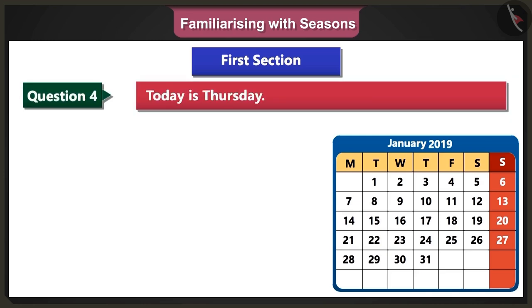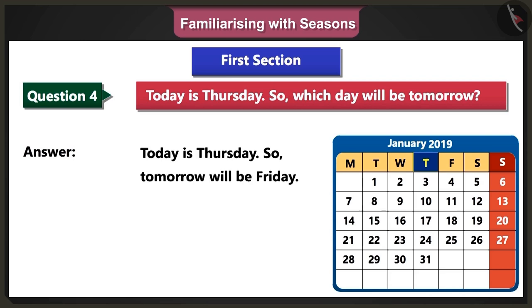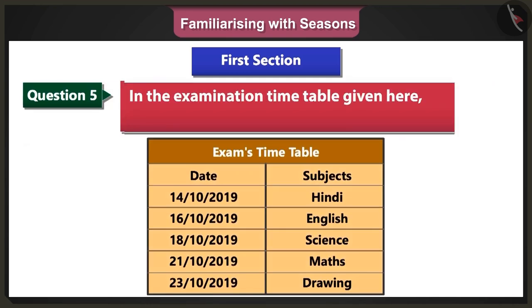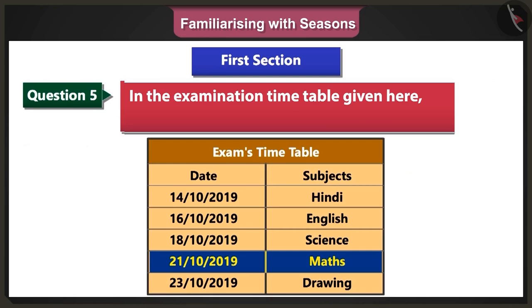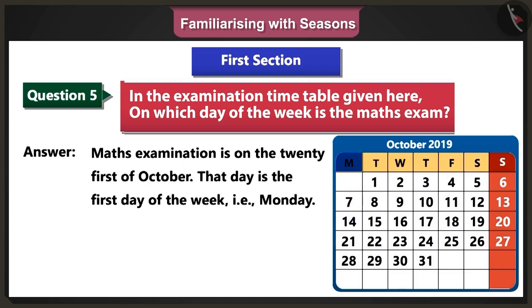Fourth question: today is Thursday, so tomorrow will be which day of the week? Answer: today is Thursday, so tomorrow will be Friday. Fifth question: in the examination timetable given here, on which day of the week is the maths exam? Answer: the maths exam is on the 21st of October, which is Monday, the first day of the week.